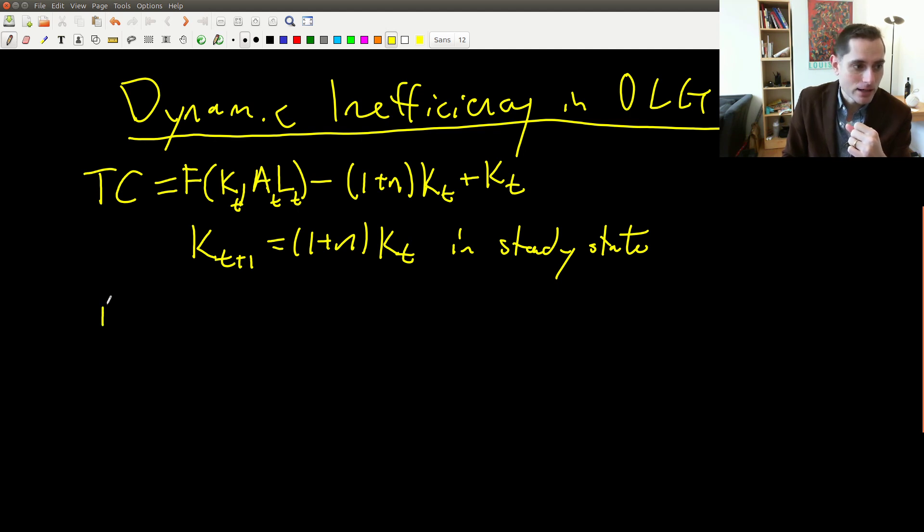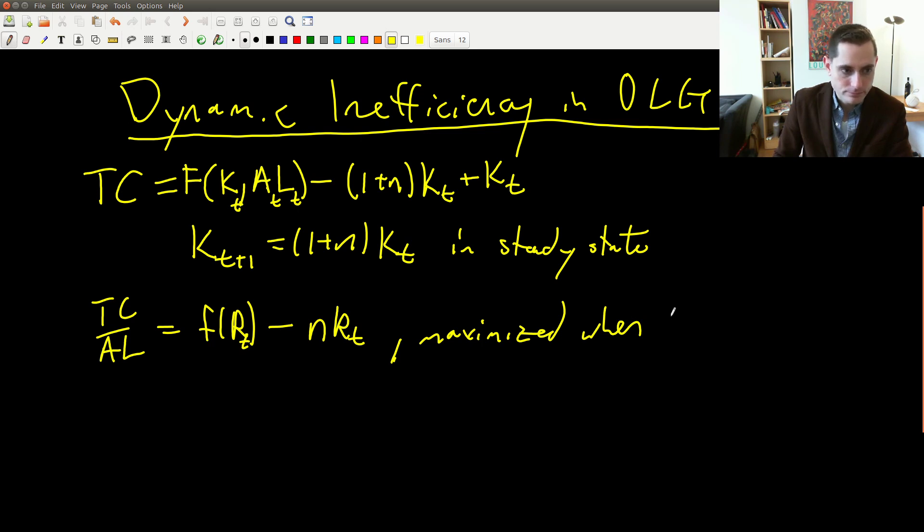Now we can write that in our nice intensive form, just to get what was on the slide. So we can write f of little k, this is t minus n little kt. So the argument here, if you recall, is that this will be maximized. So we can maximize this in steady state. So the steady state that has the maximum amount of consumption is the one where this amount of capital is saved, where the slope of the production function is equal to n. So that's what maximizes consumption in steady state total consumption of both old and young.